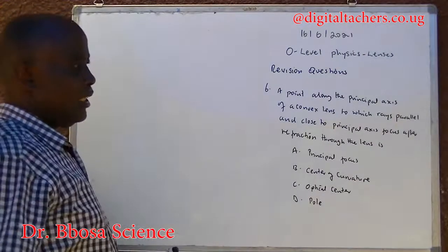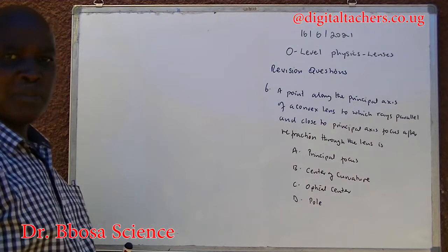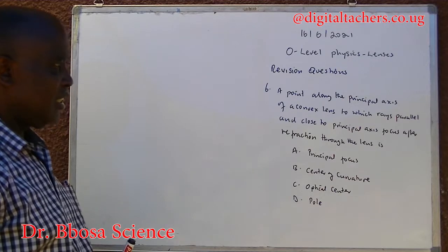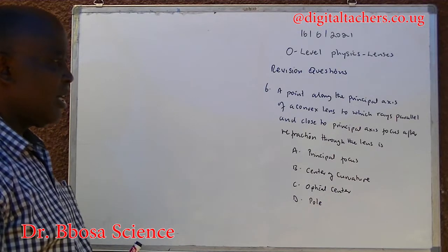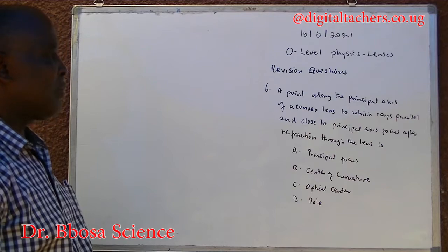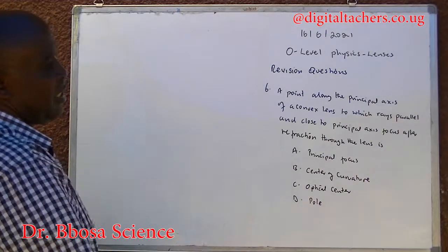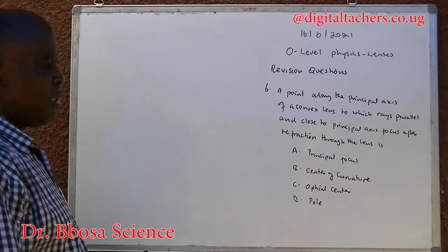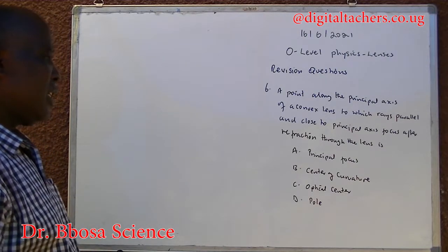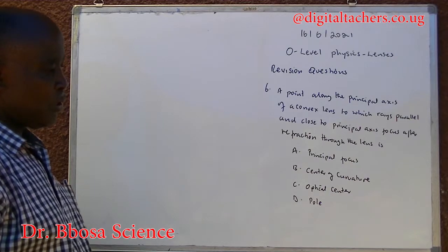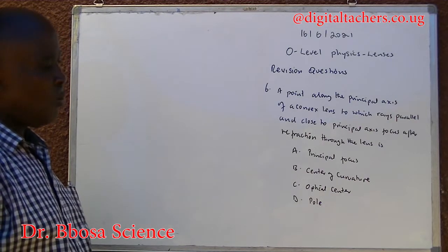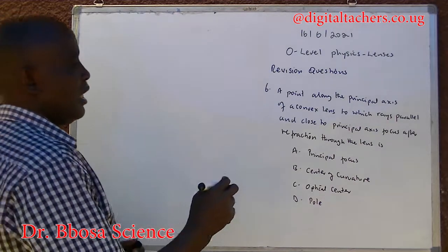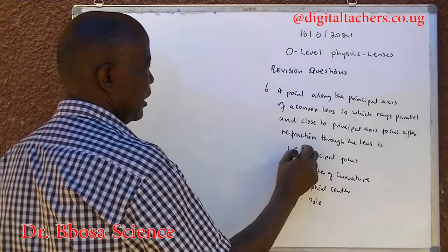Number six: a point along the principal axis of a convex lens to which rays parallel and close to the principal axis converge after refraction through the lens is: A — Principal focus, B — Center of curvature, C — Optical center, D — Pole. You can pause and answer. The answer is A.